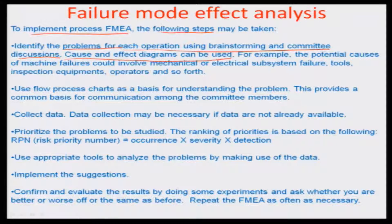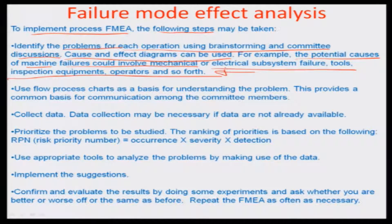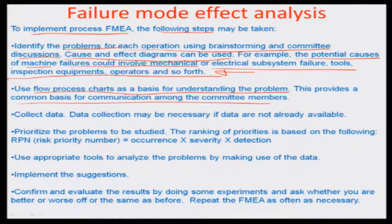These are also known as the Ishikawa diagram or herringbone diagrams. The potential causes of machine failures could involve mechanical or electrical subsystem failures, tools, inspections, equipment, operators, and so forth. This has to be very clearly laid out as the exact problem and the responsible reason, and you can use flow process charts as a basis for understanding the problem, which provides a common basis for communication among committee members.